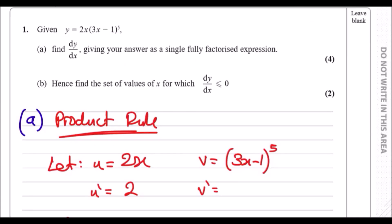Number one. Given y = 2x(3x-1)^5, find dy/dx giving your answer as a single fully factored expression. Before you look at the solutions, how do we differentiate this? We can see we've got two functions: 2x and (3x-1)^5.